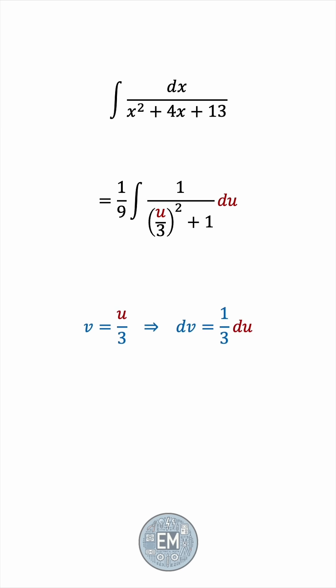And the integral transforms to 1 third the integral of 1 over v² + 1. This is precisely the arctan form. So we're now ready to integrate, giving us 1 third of the arctan of v.